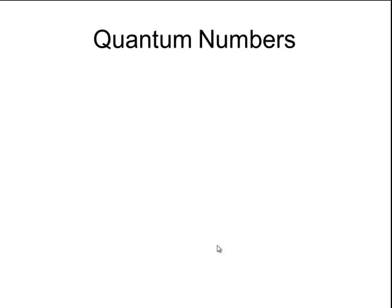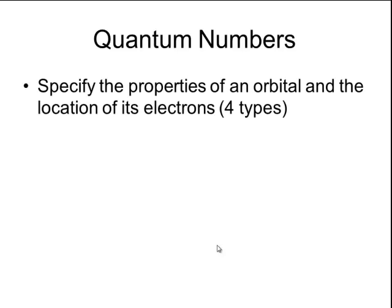In order to identify the location of an electron, we need to use values called quantum numbers. A quantum number specifies the properties of an orbital and the location of its electrons. So it's kind of like the physical address of any electron in an atom. There are four types of quantum numbers.